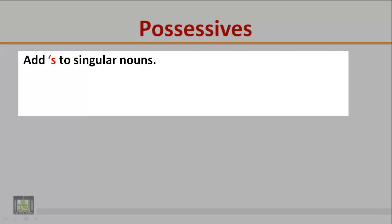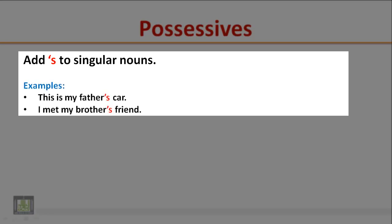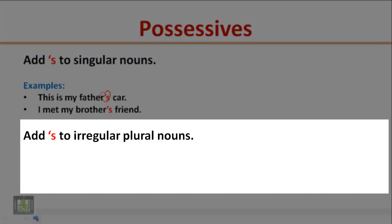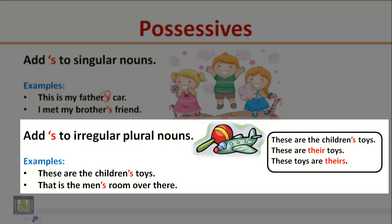Add apostrophe S to singular nouns. These are the children's toys. That is the men's room over there. Here, children is an irregular plural noun, so we add apostrophe S.